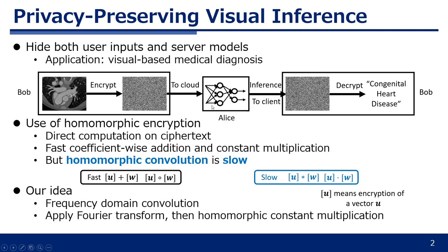During this process we need to use something called a homomorphic encryption scheme, where it allows us to directly compute over ciphertext, but it only permits fast coefficient-wise addition and constant multiplication.